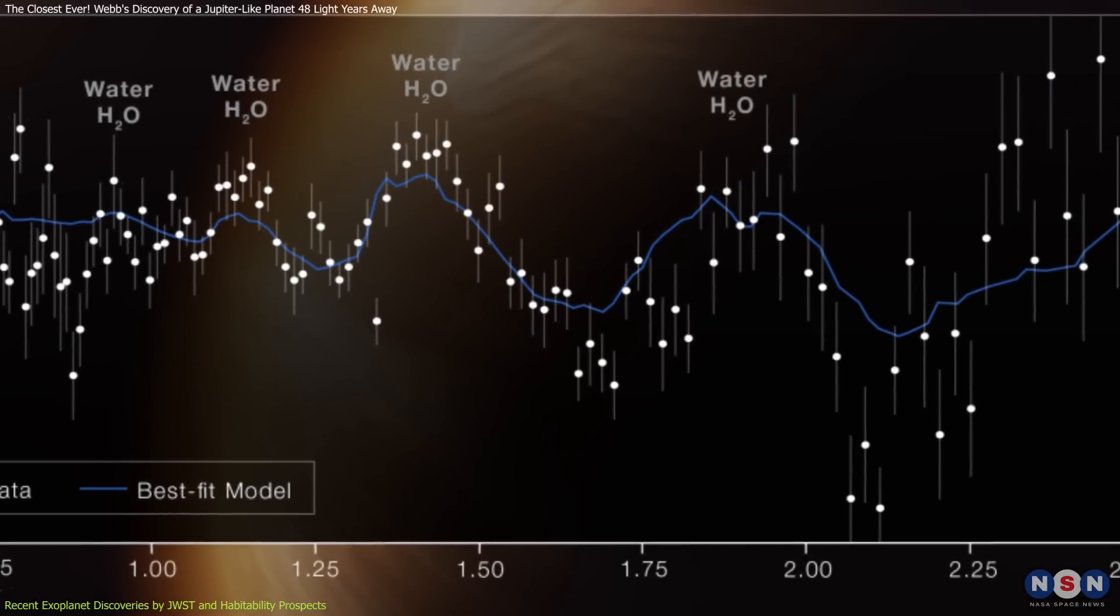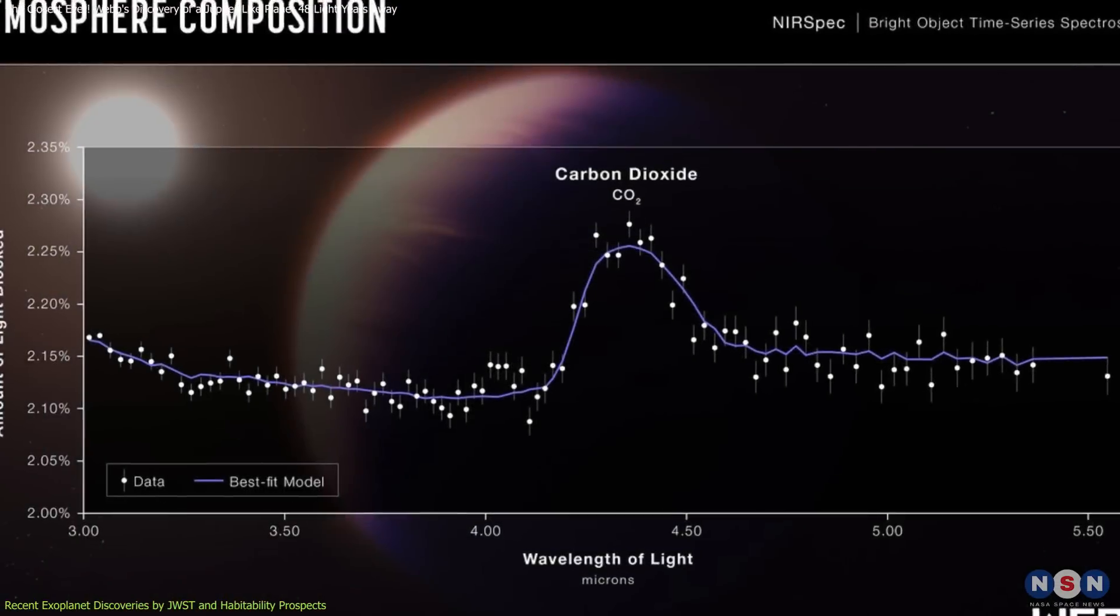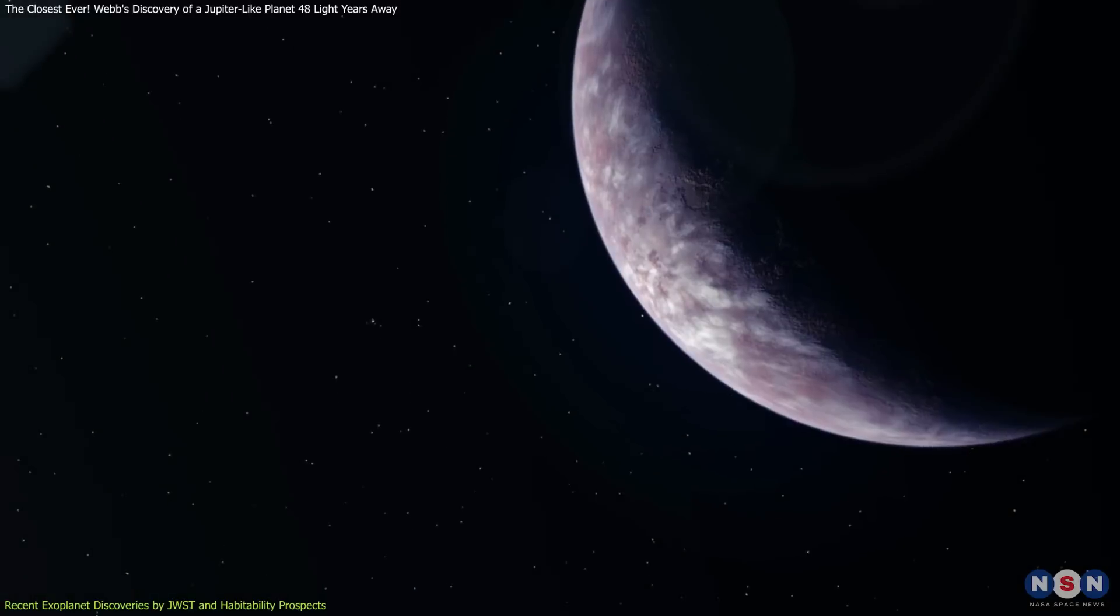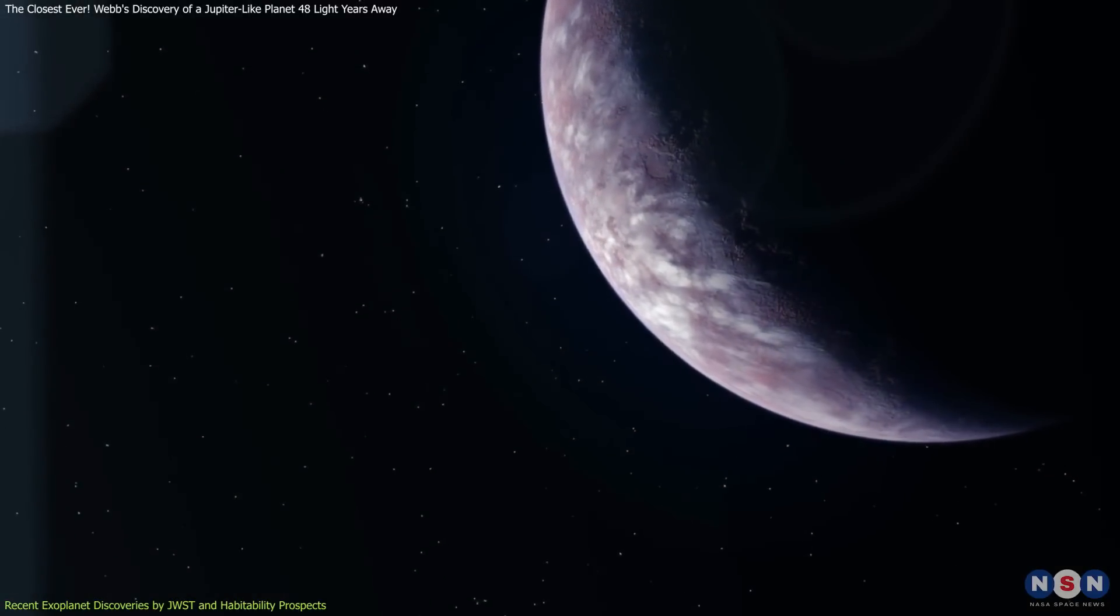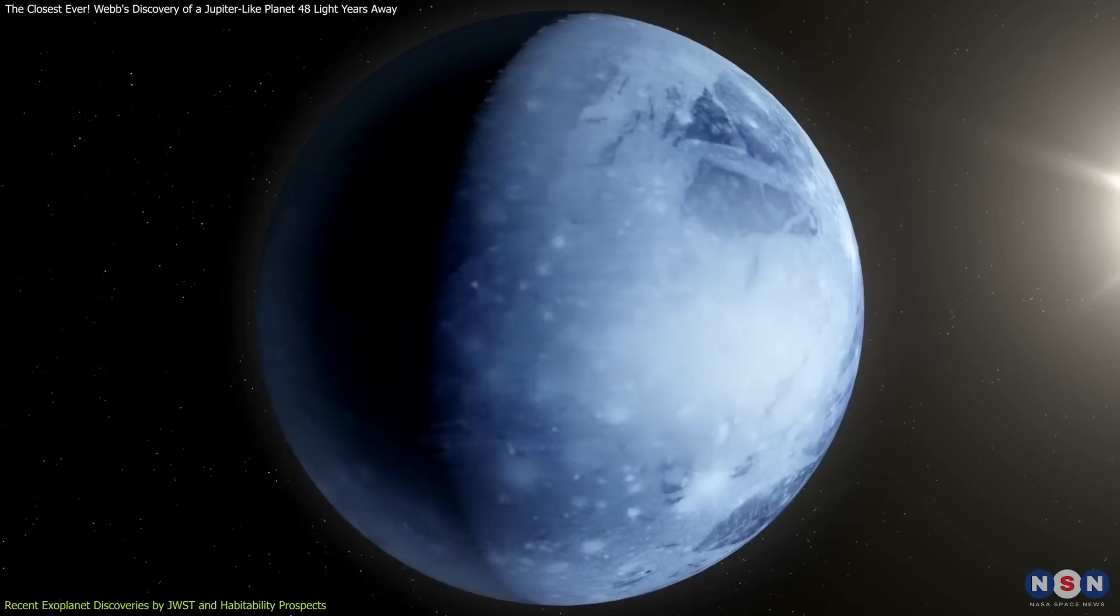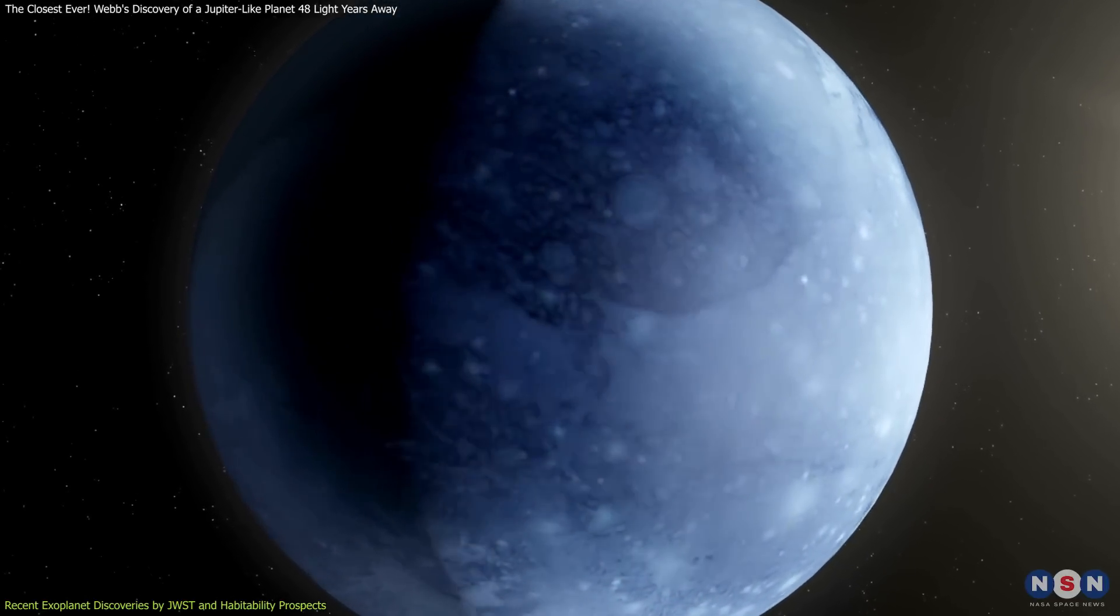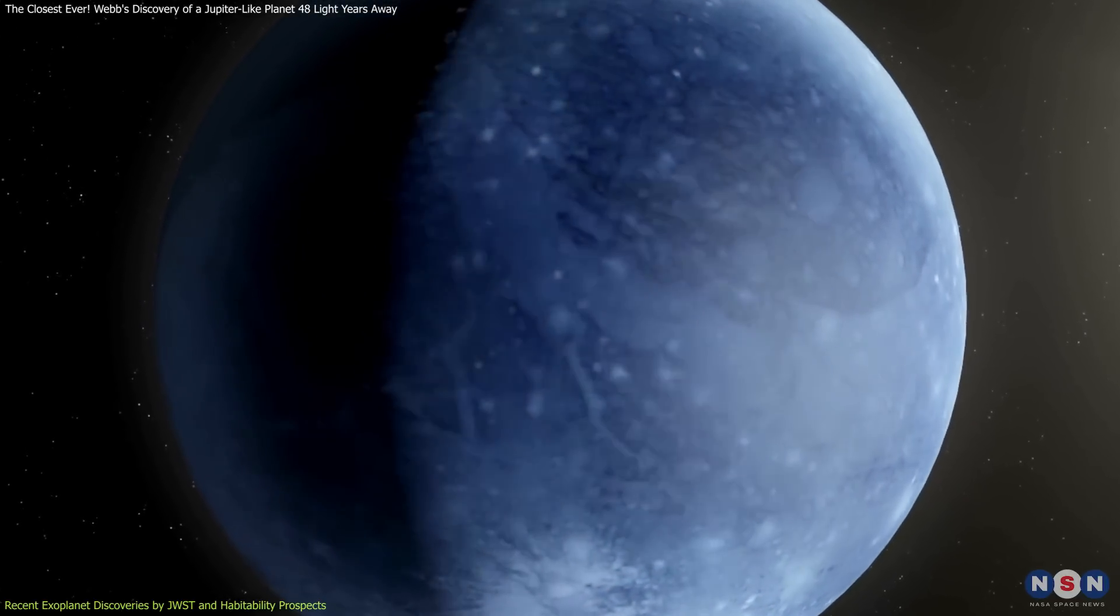The detection of molecules like water vapor, carbon dioxide, and methane is significant, as these can indicate both geological and potential biological activities. These molecules can also tell us about the past and present processes that govern a planet's surface and atmospheric conditions.